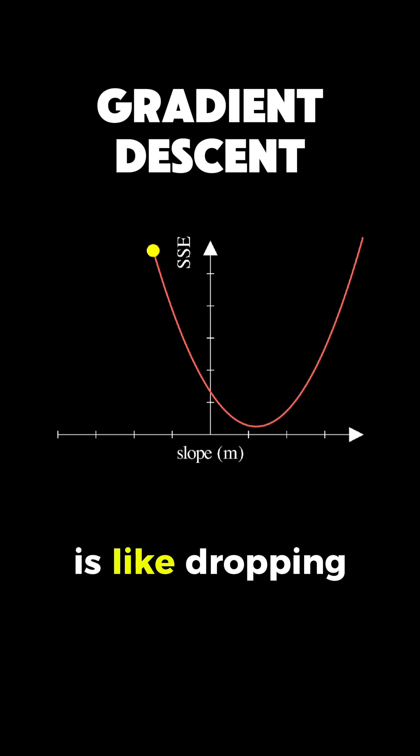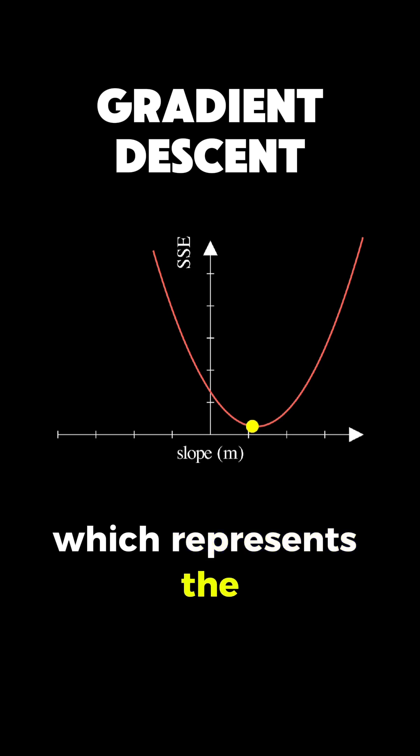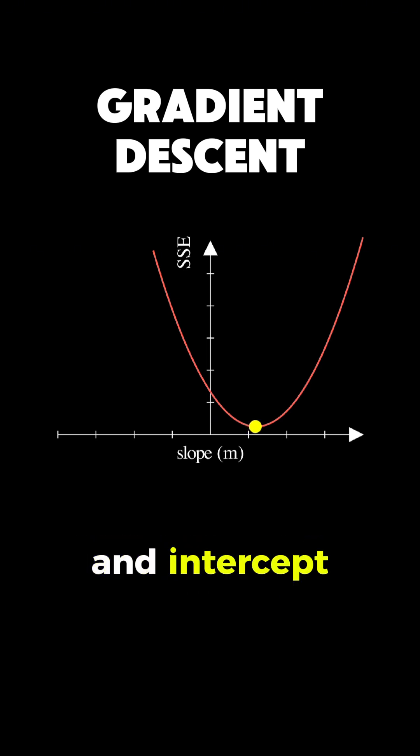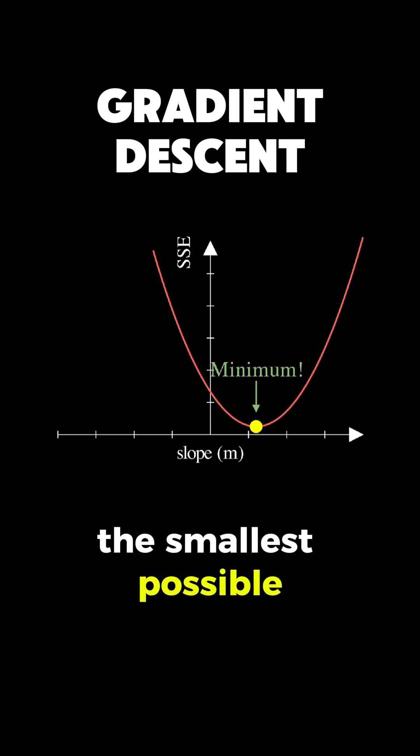What's happening visually is like dropping a ball on a curved surface and watching it roll down to the lowest point, which represents the combination of slope and intercept that gives us the smallest possible error.